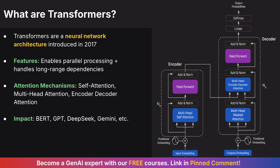When discussing features, explain clearly how, unlike RNNs, transformers enable parallel processing, which helps handle long-range dependencies effectively. You should also explain the different types of attention mechanisms, especially self-attention, and how it computes attention within a sequence using query, key, and value vectors to capture relationships among all positions. Emphasize the impact of transformers with examples like BERT, GPT, DeepSeek, and Gemini.